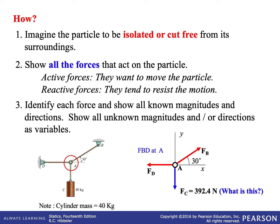We also need to identify each force and show all the known magnitudes and directions. For example, the weight is 40 kilograms — you multiply by 9.81 and get 392.4 newtons. For the unknown forces, we show them as variables and indicate their directions as unknowns. So FB and FD are the ones we need to solve for. Step one is creating the free body diagram, and the end goal is to construct equations of equilibrium and solve for unknown variables — forces or angles.